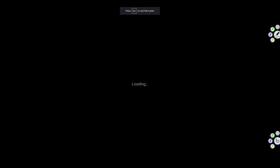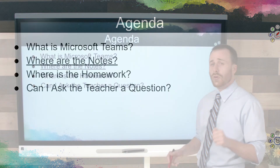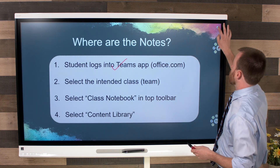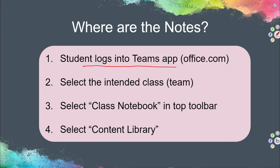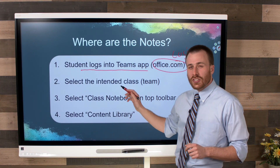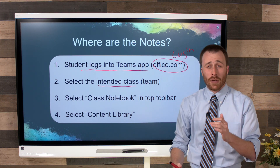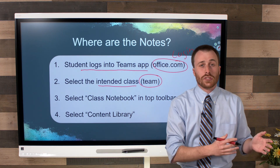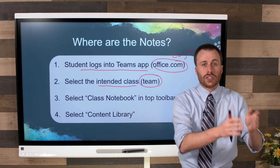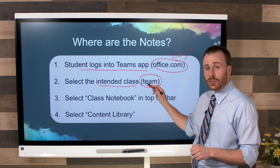Now we need to find out where are the notes. The student logs into the Teams app at office.com — make sure you know that login information. Once you're in Teams, you need to select the intended class. I'm using the word 'class' because that's probably what you're familiar with as a parent; in Microsoft, they're calling it a 'team.' So your student might be in four different teams for four different classes — maybe their math team, language arts team, social studies team, science team — depending on what teachers are using Microsoft Teams.